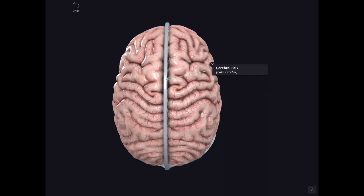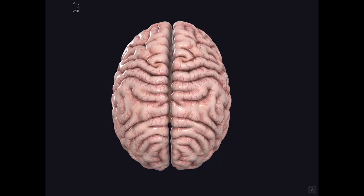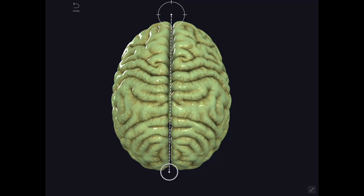The median longitudinal fissure is occupied in the resting state by a sickle-shaped fold of dura mater, that is the falx cerebri. To study the gross anatomy of each cerebral hemisphere, the brain is divided into two symmetrical halves by a median sagittal section passing through the corpus callosum and the brain stem.